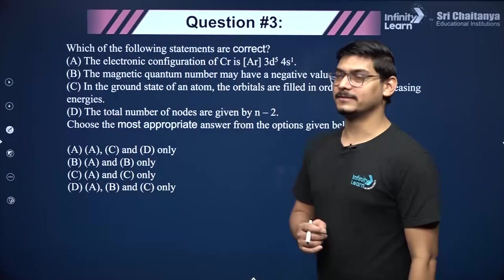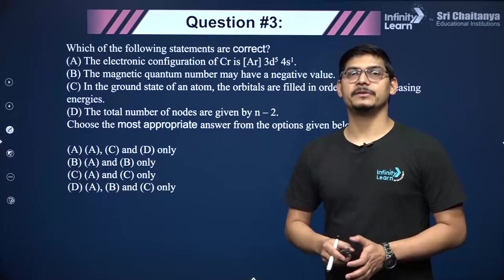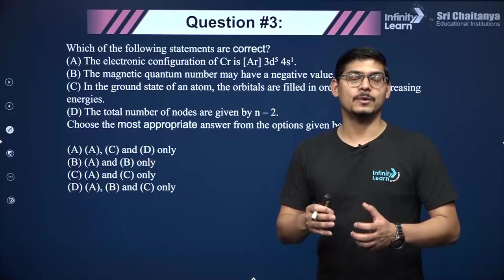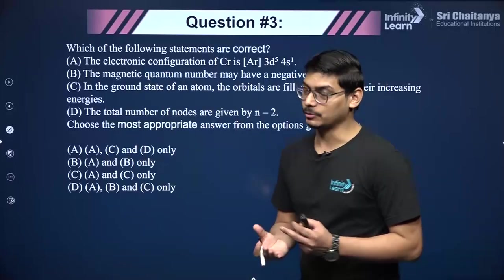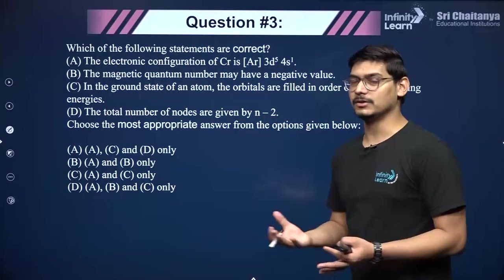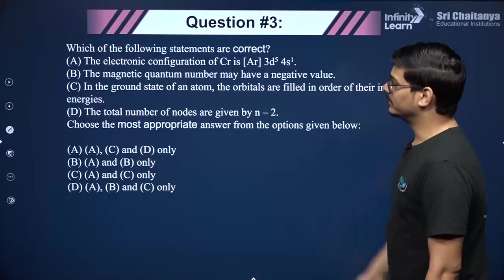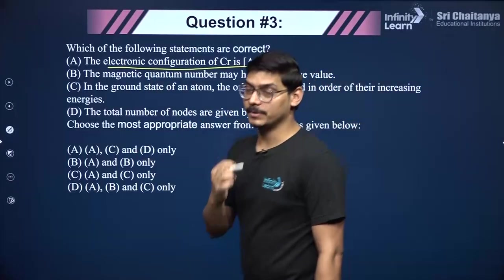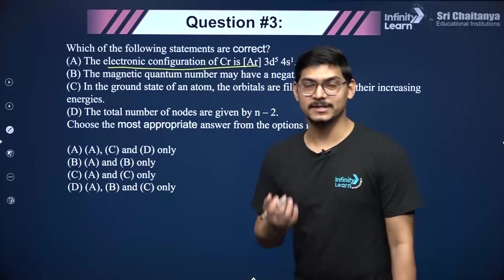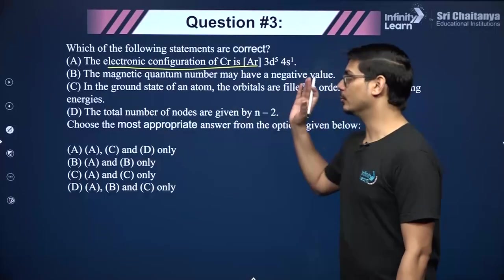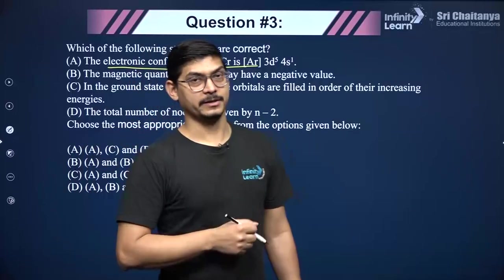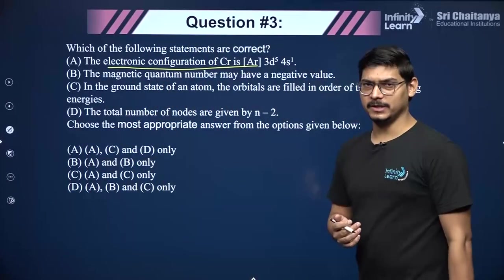Now this question is from the structure of atom. The quantum mechanical model is something you have to do very thoroughly, because a lot of understanding of chemistry depends on how well you understand it — quantum numbers, orbitals, their shapes, signs, nodes, energies, effective nuclear charge. Also, electronic configuration is something JEE has been asking many times — especially for d-block and f-block elements. Go through previous year question papers from the last 10 to 20 years.